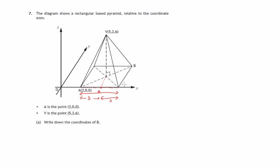We'll do a similar exercise going from A to the centre of this line. Travelling parallel to the Y axis, from 0 to a Y coordinate of 2, that's a distance of 2 units. Therefore by symmetry, continuing along this line to B, we'll have travelled another 2 units, so this side of the rectangle on the base is 4 units long.